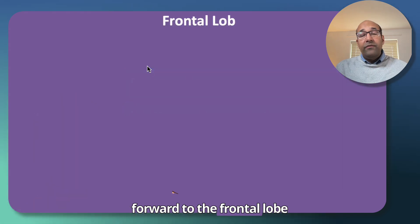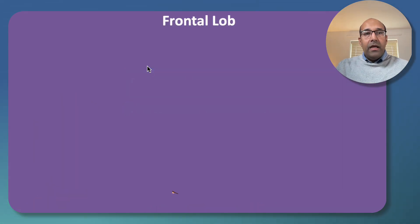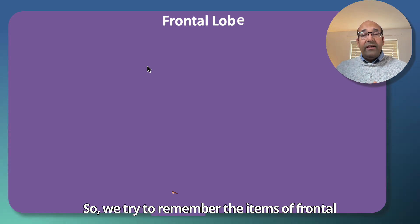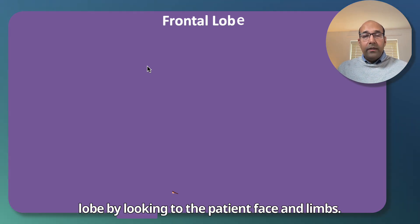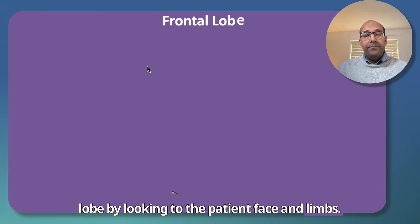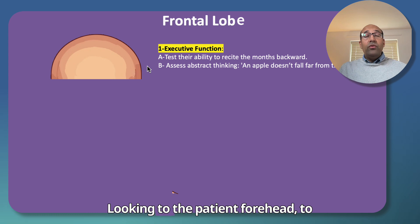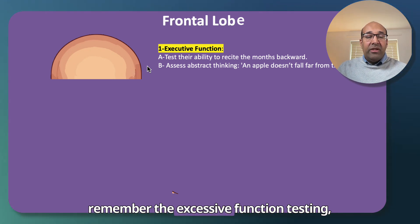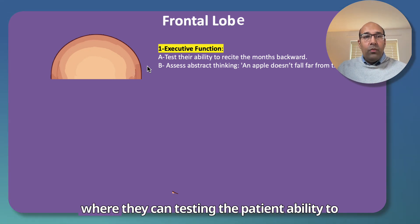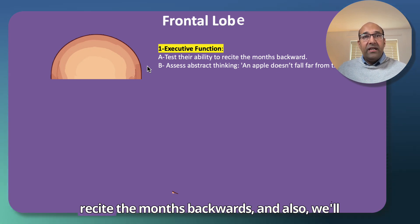Moving forward to the frontal loop. We try to remember the items of the frontal loop by looking at the patient's face and limbs. Looking at the patient's forehead helps you remember the executive function testing, where you test the patient's ability to recite the months backwards.